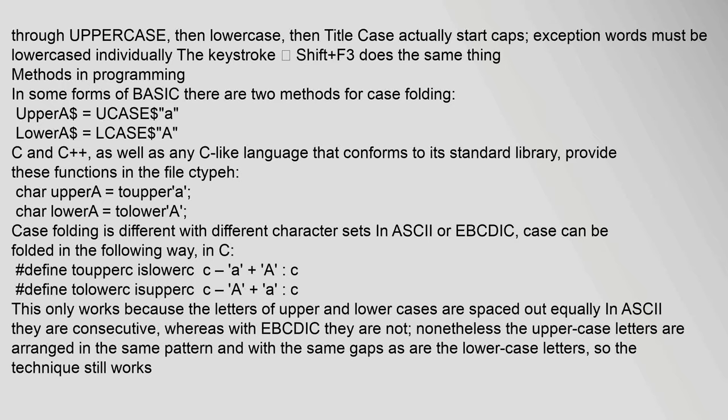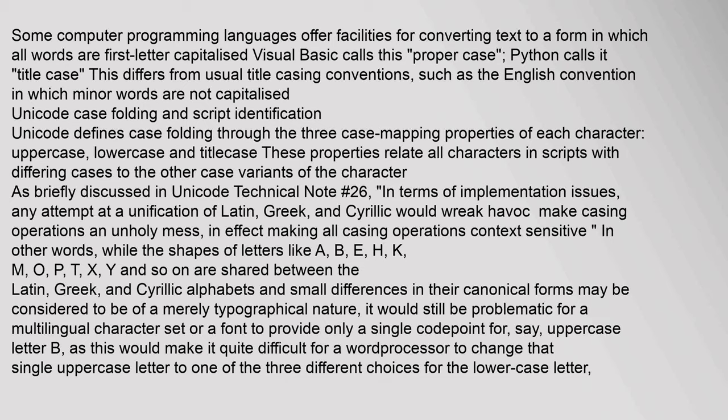Case folding differs with different character sets. In ASCII or EBCDIC, case can be folded by defined macros. This only works because the letters of upper and lower cases are spaced out equally in ASCII — they are consecutive — whereas with EBCDIC they are not. Some computer programming languages offer facilities for converting text to a form in which all words are first-letter capitalized: Visual Basic calls this 'proper case,' Python calls it 'title case.' This differs from usual title-casing conventions such as the English convention in which minor words are not capitalized.